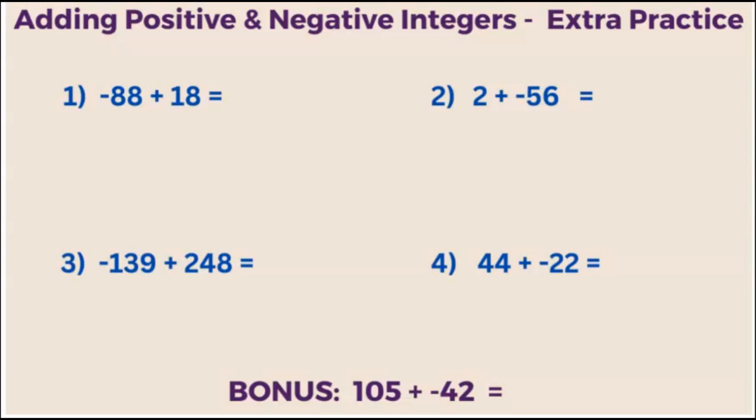Example 1. What is negative 88 plus 18? You know the drill. Let's take the absolute values and subtract them. So this turns into absolute value, just means drop the negative sign. 88 minus 18 ends up being 70.